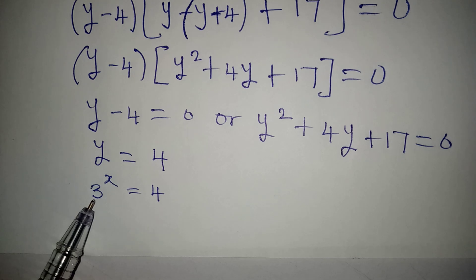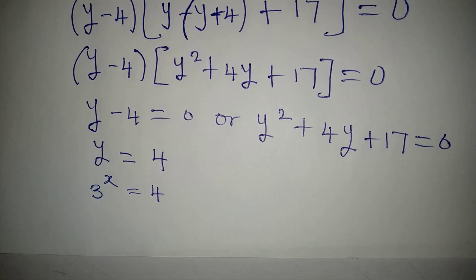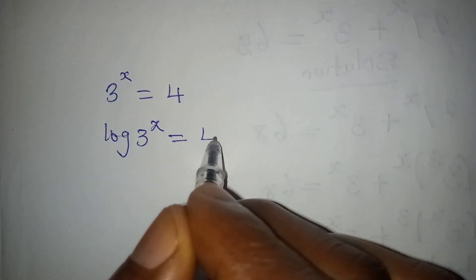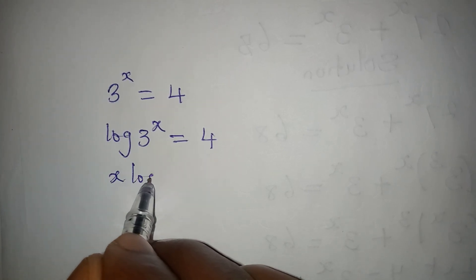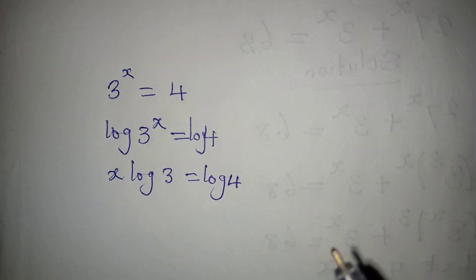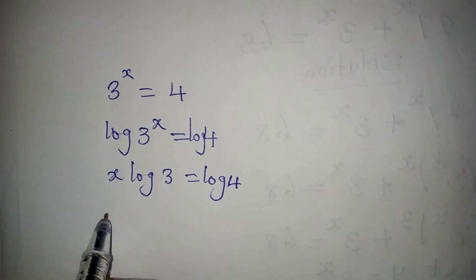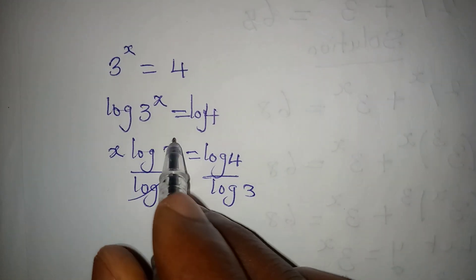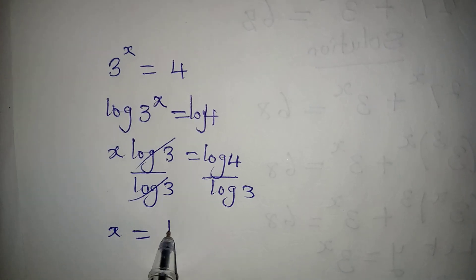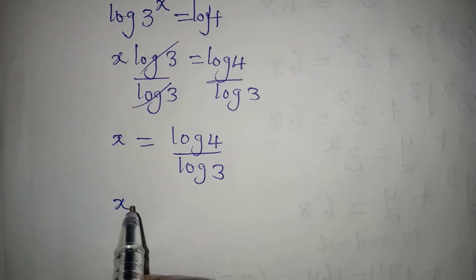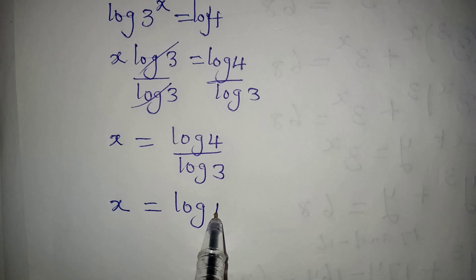For us to get the value of x, we apply logarithm. We have log of 3 to the power x equals log 4. From here, x times log 3 equals log 4. Dividing both sides by log 3, x equals log 4 over log 3. And according to the laws of logarithm, this is the same thing as log 4 to the base of 3. So this is the value of x.